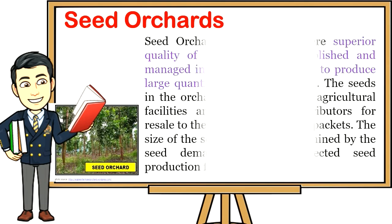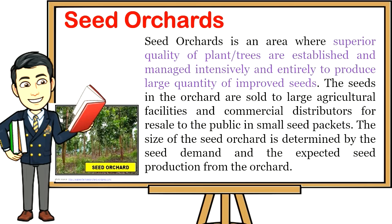Seed orchards are areas where superior quality plant trees are established and managed intensively and entirely to produce large quantities of improved seeds. The seeds in the orchard are sold to large agricultural facilities and commercial distributors for resale to the public in small seed packets. The size of the seed orchard is determined by the seed demand and the expected seed production from the orchard.